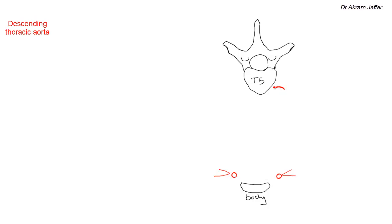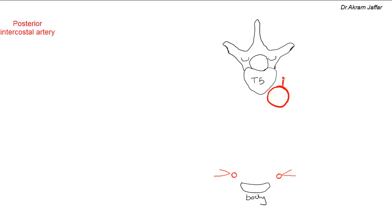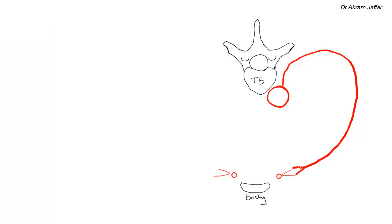Posteriorly located is the descending thoracic aorta. As you can see, it causes a little bit of flattening of the left side of the anterior aspect of the body of the thoracic vertebrae in the middle of the series. It is not a midline structure — it is a little bit deviated to the left — and it gives rise to posterior intercostal arteries. These posterior intercostal arteries form a single artery in each intercostal space, and they are long, large, and anastomose anteriorly with the anterior intercostal arteries.